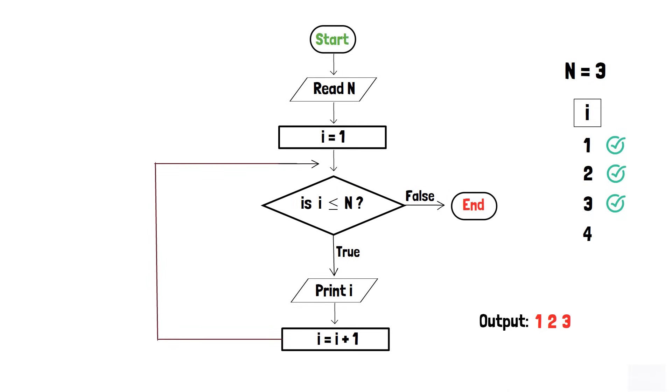As soon as i equals 4, the condition in the decision box becomes false. That is, 4 is not less than or equals to 3, and finally the program terminates.